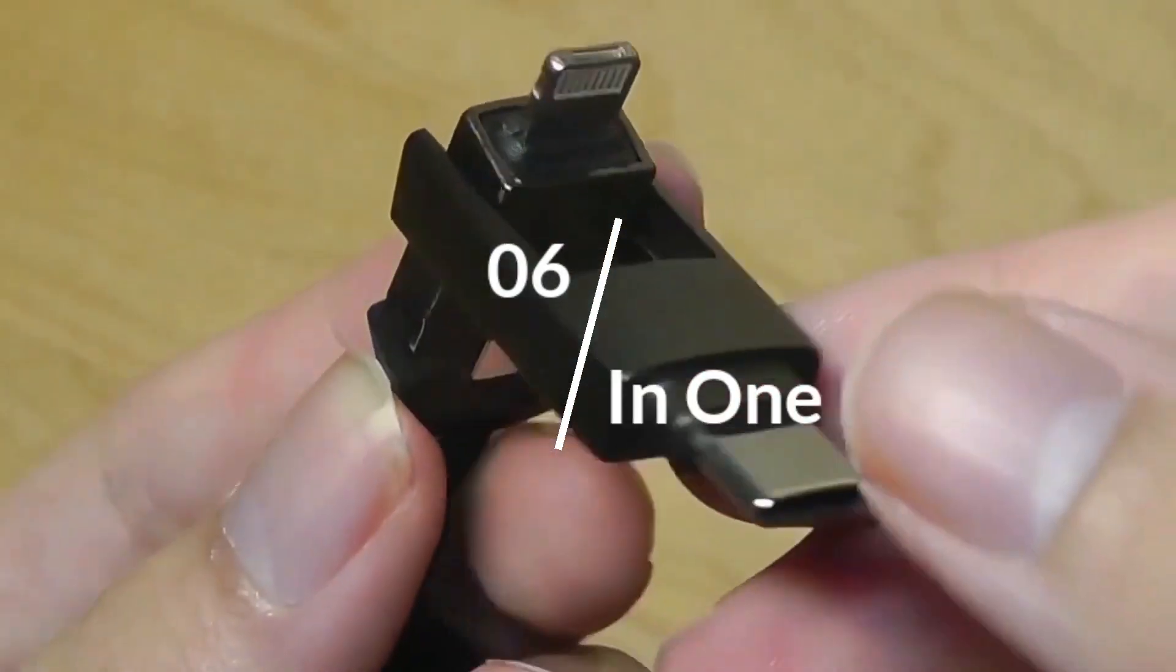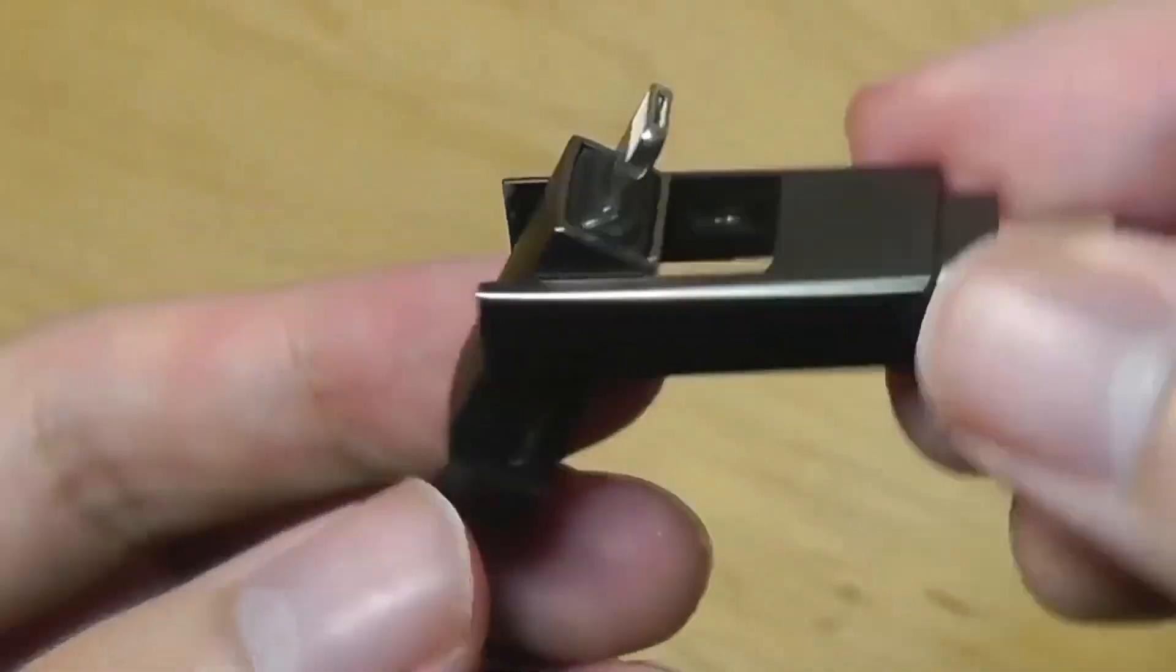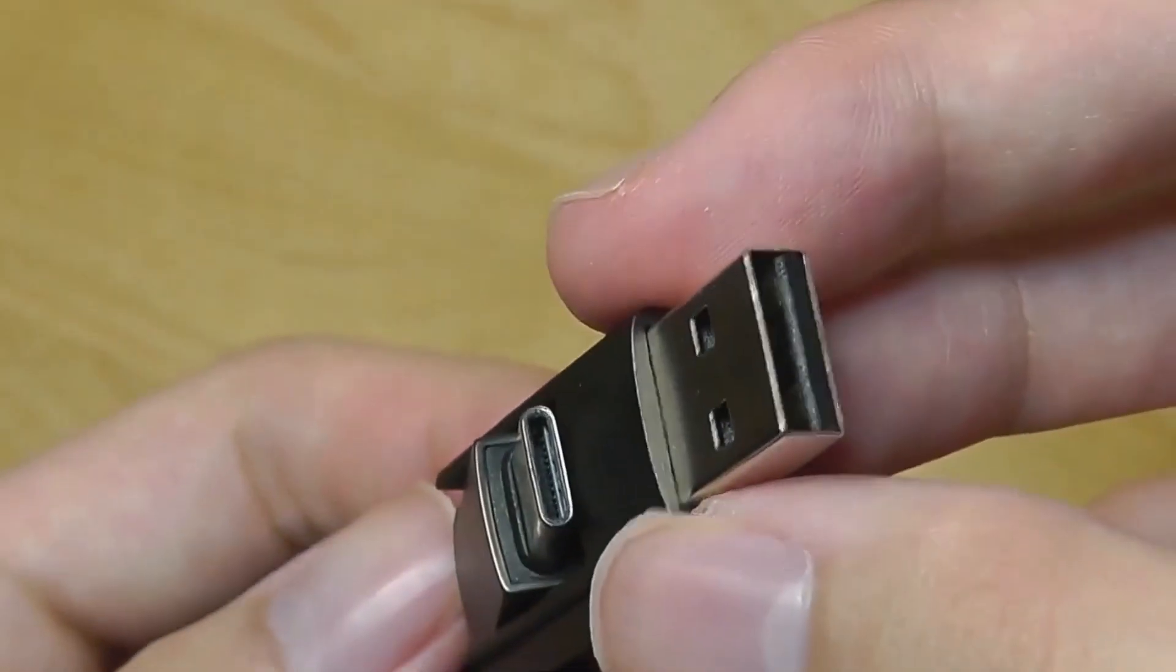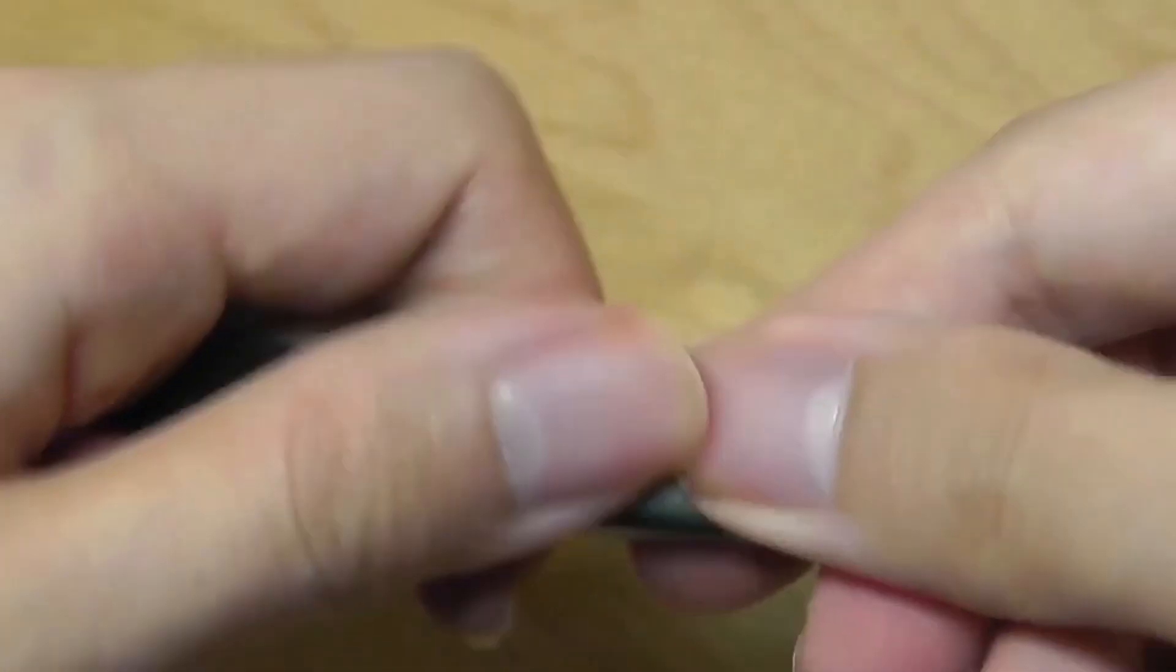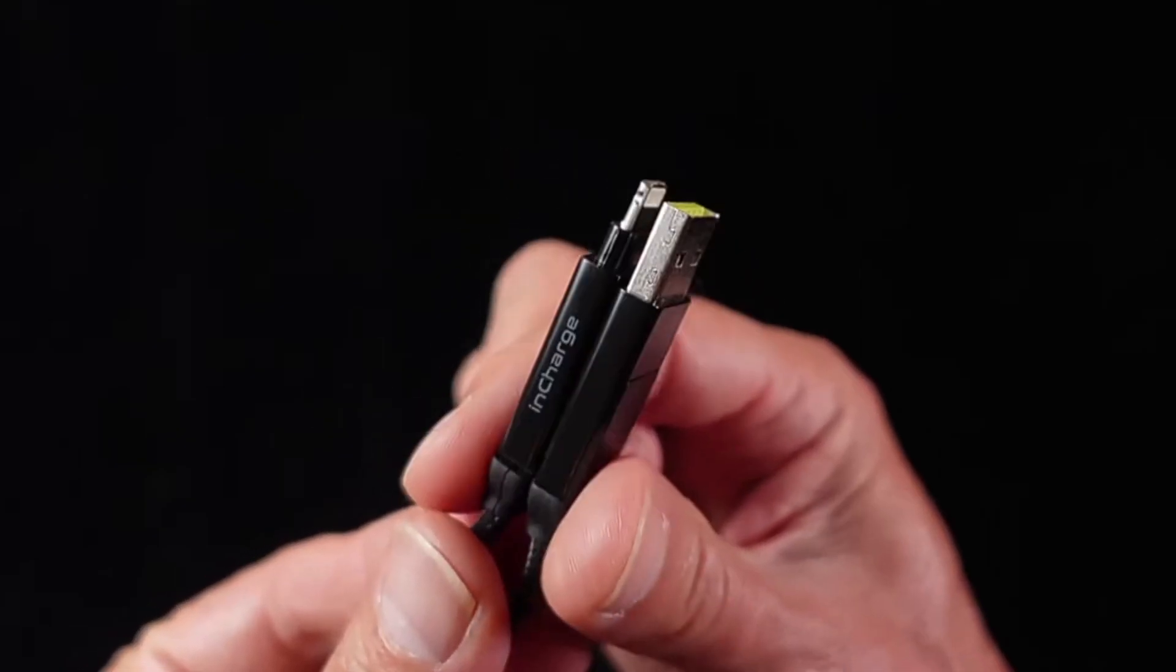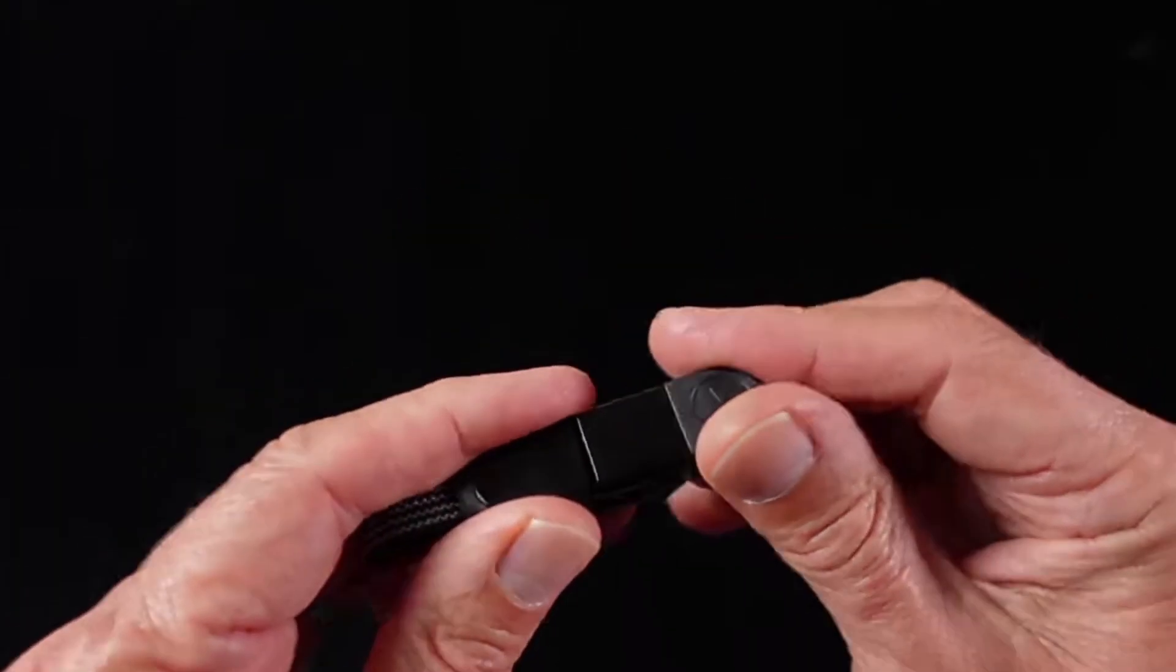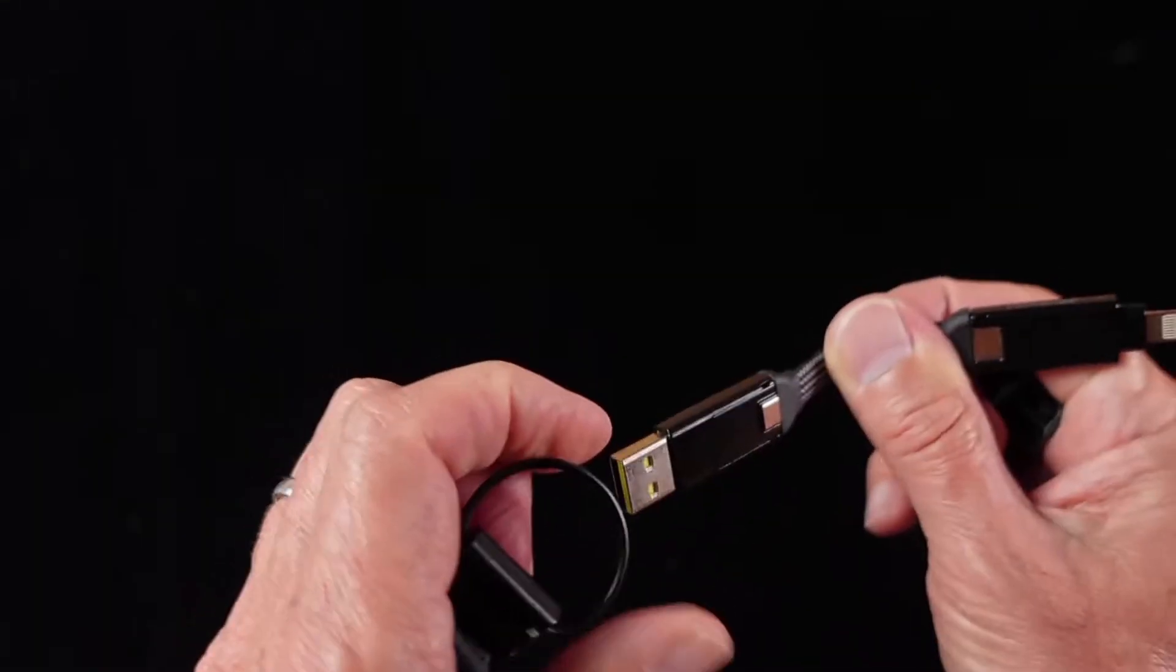This is a six-in-one connecting cable that lets you connect between different types of USB devices. To be exact, the InCharge 6 supports USB Type-C, Lightning, and Micro USB connections. There are six combinations that you can mix and match.